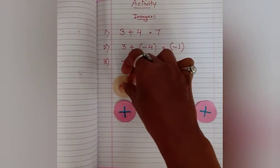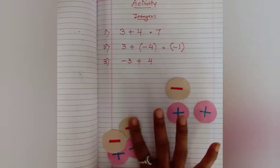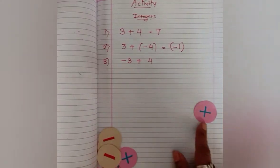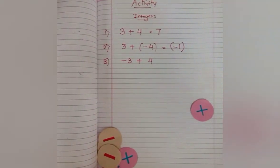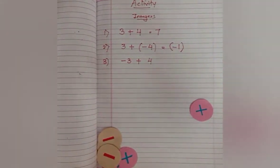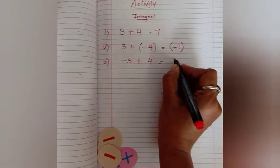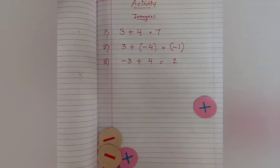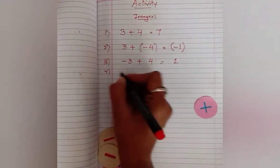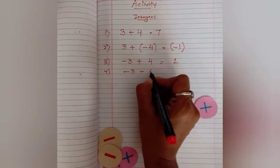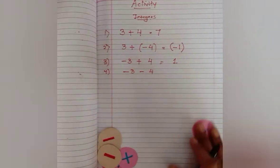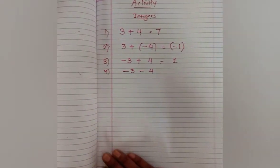Neutralize this pair, next pair, and next pair. What is remaining? One plus. So positive one is the answer. Now for the next example, we will take both numbers negative: minus three minus four.